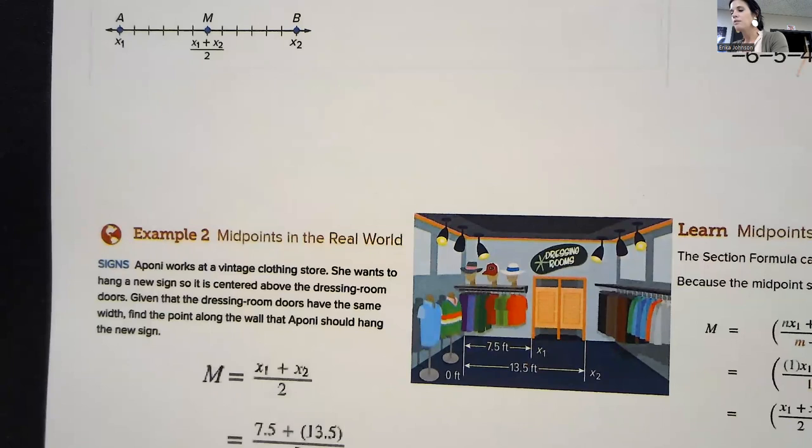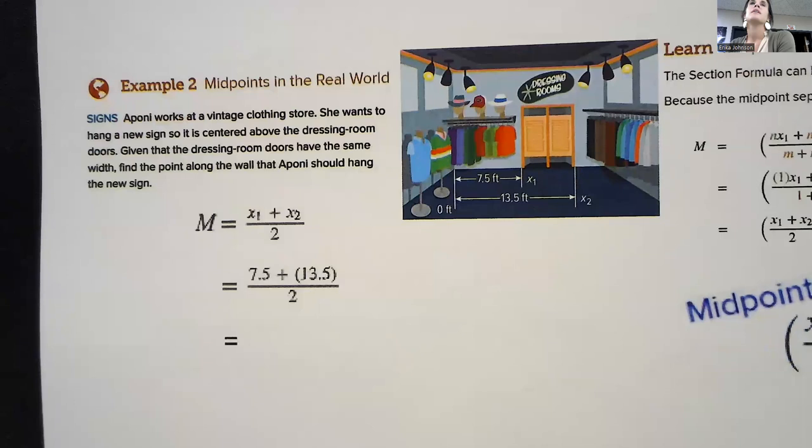All right. So here's one. It says, Bonnie works at a vintage clothing store. She wants to hang a new sign. So it's centered above the dressing room doors. Given the dressing room doors have the same width, find the point along the wall that Bonnie should hang the new sign.